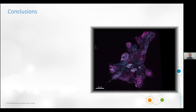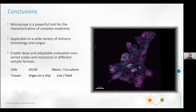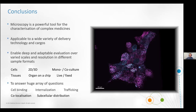This just shows how powerful microscopy can be in visualizing certain aspects of complex medicine. In conclusion, microscopy is applicable to a wide variety of delivery technologies and cargoes. It enables deep and adaptable evaluation across a wide variety of scales and resolutions. You can look at cells in 2D, 3D, monoculture, co-culture; you can look at tissues, organs-on-chip; you can look at them live or fixed. And you can answer a huge array of questions: what do these things actually bind to? Are they internalized? How are they trafficked? Do they reach the lysosomes? Do they release their drug while in the lysosomes? Do they co-localize with anything in particular? And you can look at subcellular distribution.